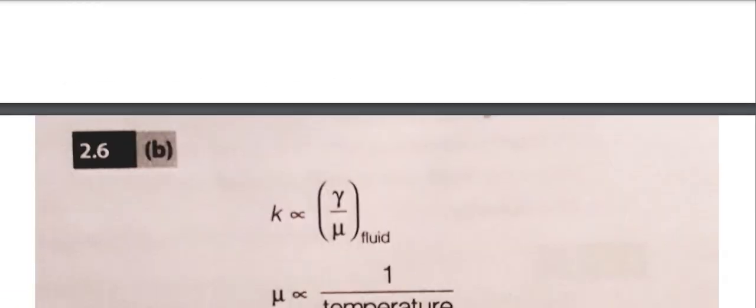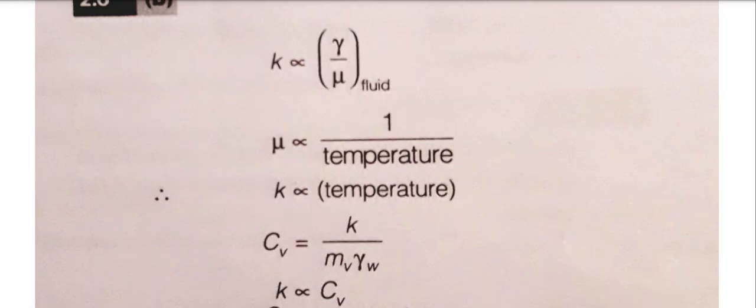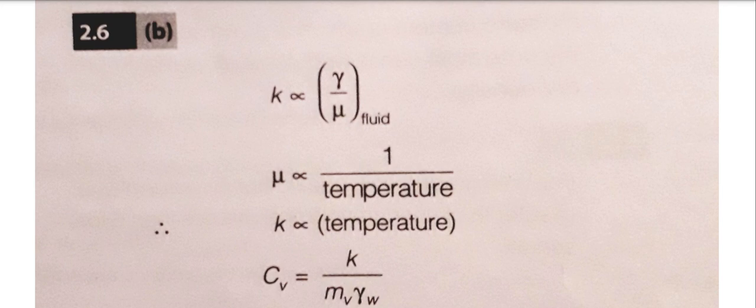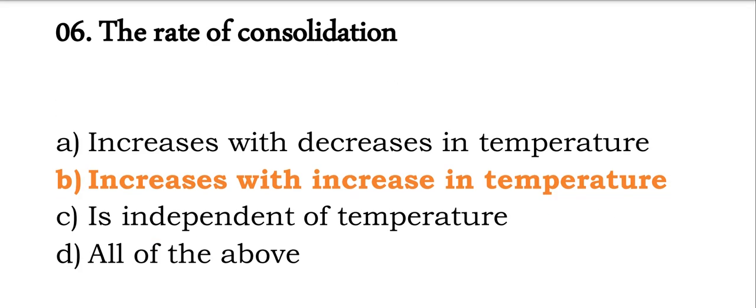Next: The rate of consolidation depends on temperature. If you remember the formula, coefficient of permeability is nothing but gamma w divided by mu, and mu is basically the viscosity which is 1 by temperature. From here I can write K is proportional to temperature. We know that Cv is K divided by Mv gamma w. The coefficient of consolidation is directly linked with temperature. So the rate of consolidation will increase with increase in temperature.